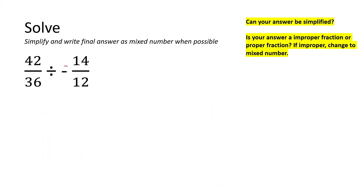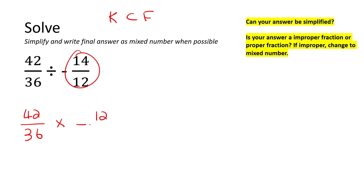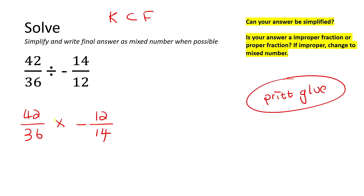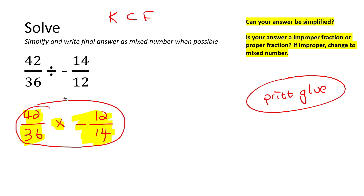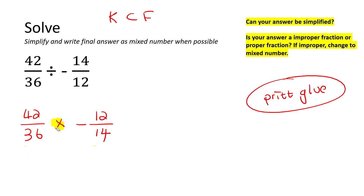Here's the question where we have a negative. Don't worry about that for now — let's first do the divide sign. Remember KCF: keep the first fraction as it is, change the sign, and keep the negative there, then flip the second fraction upside down to get 12 over 14. Now remember from the lesson on integers, when you have a multiply sign you highlight the two things next to it and count the number of negative signs. We only have one negative, and one is an odd number, so the whole answer needs to be a negative. I'm going to put a negative right in the front.